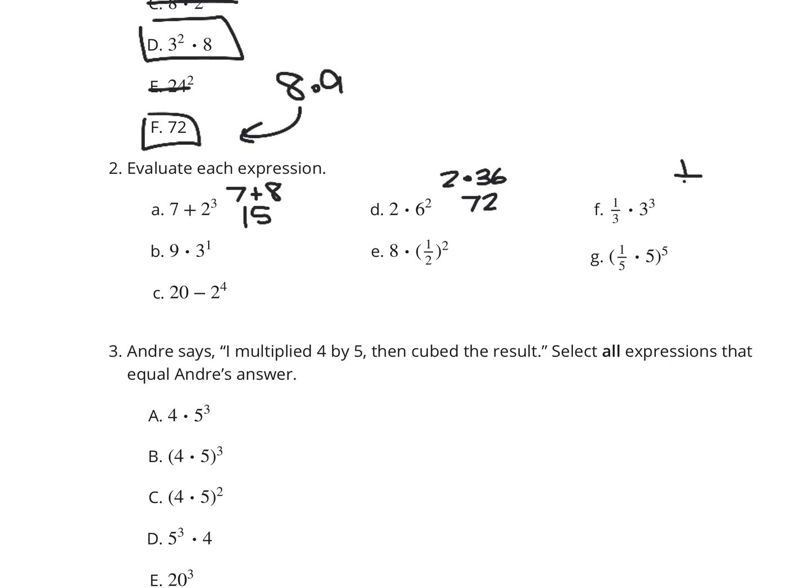1 third times 3 to the third, that's going to be 1 third times 27, which is 9. 9 times 3 to the first is 9 times 3, which is 27.